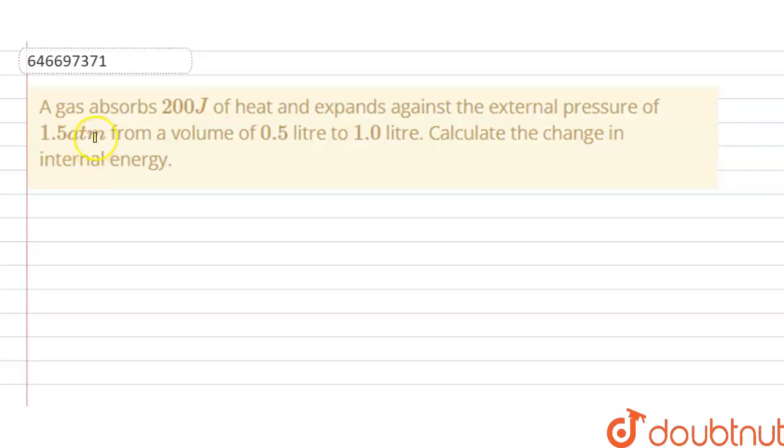Hello students, today our question is a gas absorbs 200 joule of heat and expands against the external pressure of 1.5 atm from a volume of 0.5 liter to 1 liter. Calculate the change in internal energy.